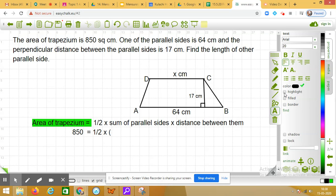So what should I write now here? x plus 64. Very good. It is x plus 64 into, what is the height? It is 17.